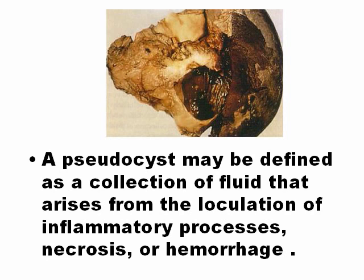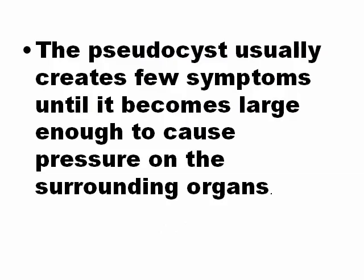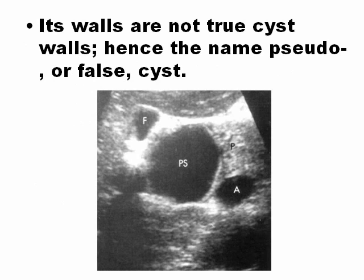A pseudocyst is a collection of fluids that arises from the loculation of an inflammatory process, necrosis, or hemorrhage. The etiology is pancreatic enzyme digestion of tissue. Pseudocysts generally create few symptoms but sometimes produce pressure on surrounding organs. Pseudocysts are not a surgical disease — with ultrasound we follow them. A pseudocyst is not a true cyst; it is a false cyst because it has no walls — it is free fluid and destroyed tissue.